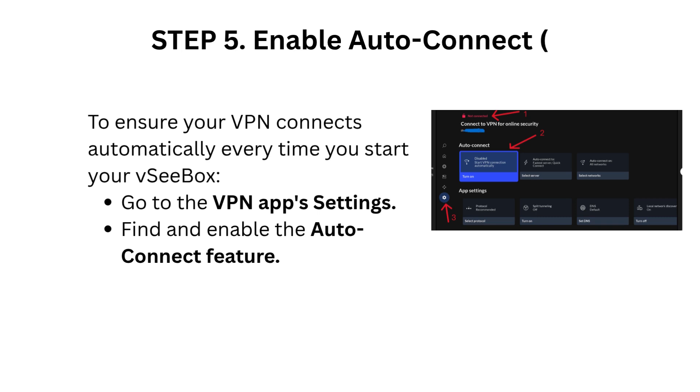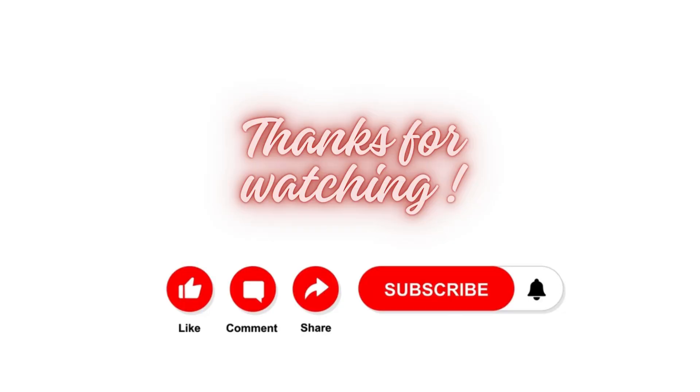Step 5: Enable auto connect. To ensure your VPN connects automatically every time you start your VCBox, go to the VPN app settings, find and enable the auto connect feature.